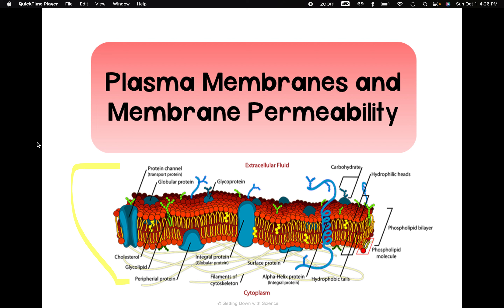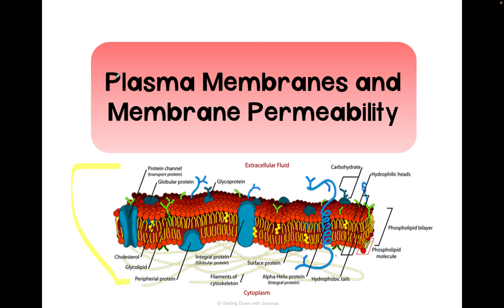Welcome to AP Biology. This is Unit 2, Topics 4 and 5: Plasma Membrane and Membrane Permeability. It's only about 14 slides, a couple of them are practice that we're going to skip over anyway so we can do in class. So let's get started.